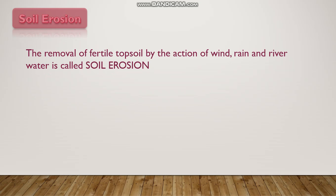Soil erosion: soil has mainly many layers. The topmost layer of the soil is called topsoil. It is the most fertile layer and the best for farming because it is rich in humus. Sometimes this topsoil is carried away by strong wind and running water. The removal of the fertile topsoil by the action of wind, rain and river water is called soil erosion.